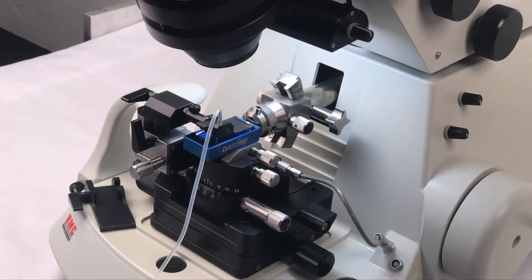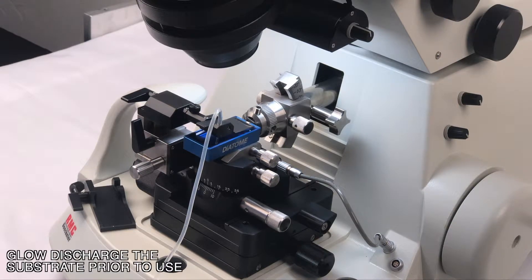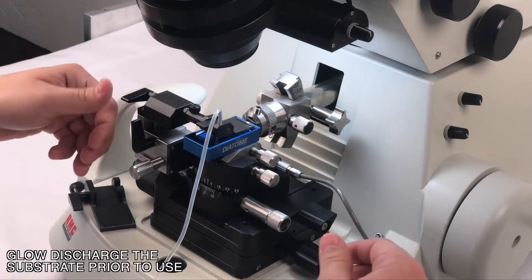This is the ash 2 operation video. Here we will demonstrate sectioning and collecting the ribbons. We will also demonstrate how to adjust the water level using the ash 2's tilt and vertical leverage. So let's get started.